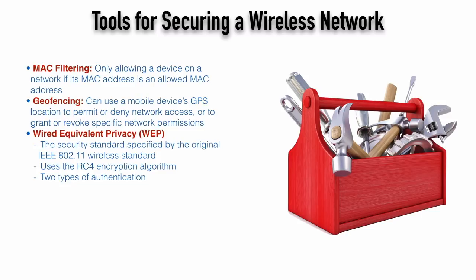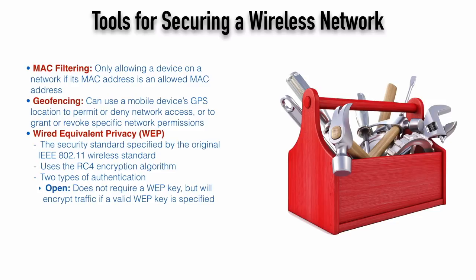As part of the WEP standard, there are two types of authentication. The first is open authentication — what you might find in a coffee shop, restaurant, or airport — where you are not required to log in to get internet access. However, if you did provide a valid WEP key, the wireless access point would accept it and your packets would be encrypted, giving you that extra benefit of encryption even in an open environment.